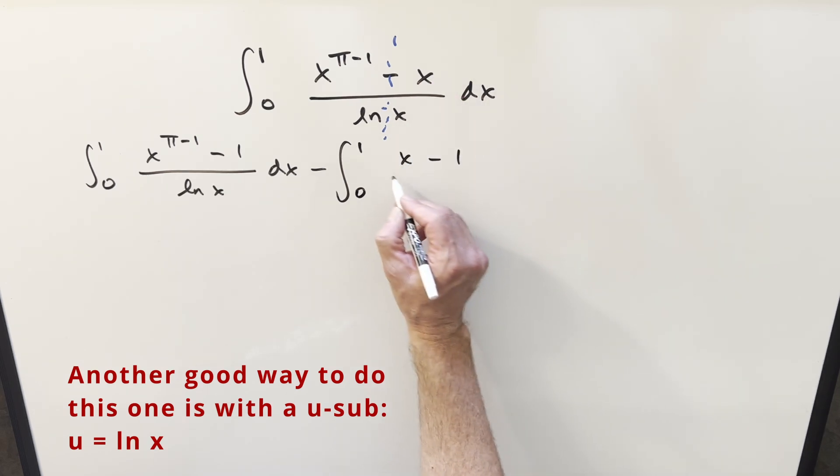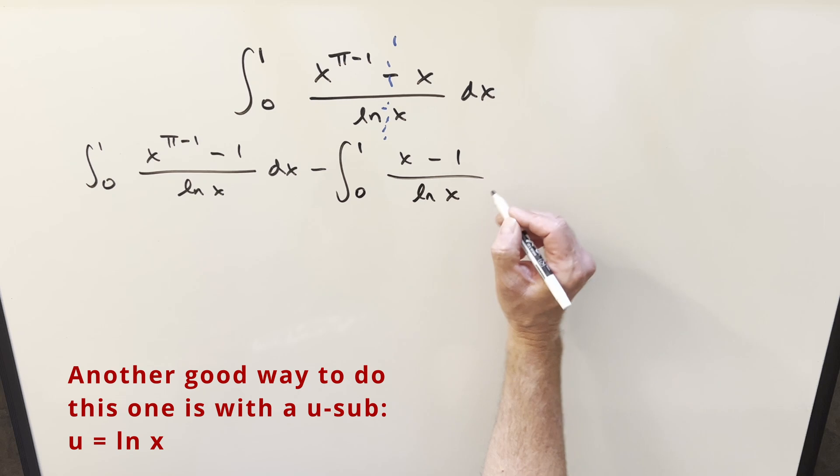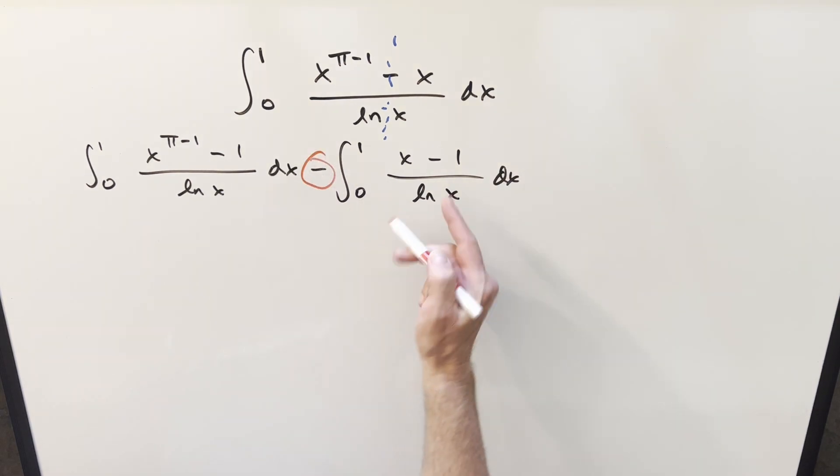Subtract 1 in order so this integral here is convergent. And this is going to be okay because if you distribute on the minus sign, this becomes a plus 1, minus 1. So all we did was add 0. So this is going to be the same thing as our original problem.